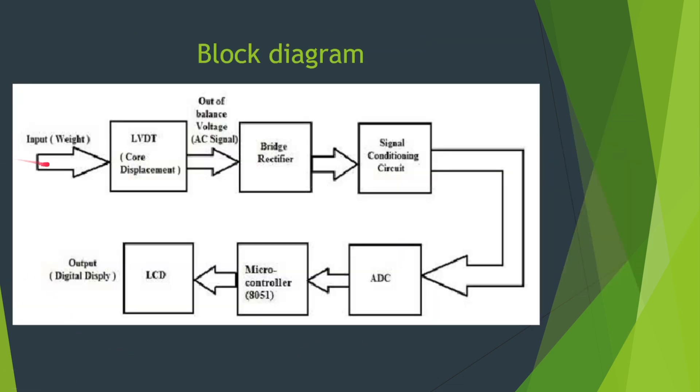Let's see the block diagram of LVDT. The input displacement is converted into the AC signal using LVDT. Then bridge rectifier rectifies the AC to DC. Then signal conditioning circuit amplifies the DC signal. And then that is given to the ADC converter which will be given to 8051. And then the output is displayed on the LCD.